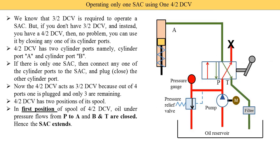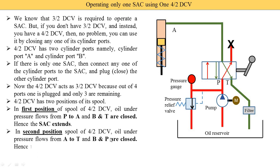This is the first position, and here is the second position of the directional control valve. In the second position of the spool of the 4/2 DCV, oil under pressure flows from A to T, and B and P are closed. P is connected with B, but you know that B is blocked, so pressurized oil goes to port B but is not supplied further to the hydraulic system — that is why it is written as closed.